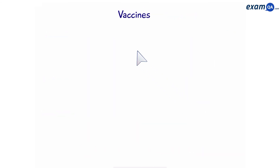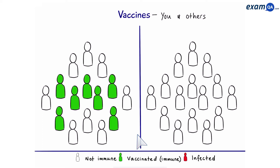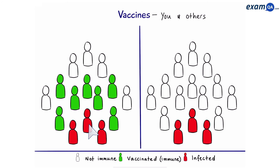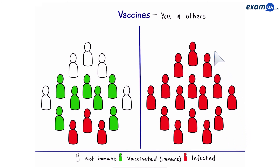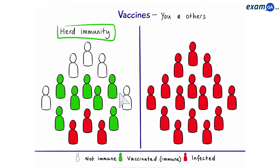Vaccines are good for you but also for others around you. Consider two populations: on the left, almost half the population is vaccinated; on the right, no one is vaccinated. If one person gets infected in each population, the pathogen in the left population spreads only to those who are not vaccinated and therefore not immune. However in the right population, the pathogen keeps on spreading. When people are vaccinated, not only does it protect themselves, but they also act like a shield and prevent the pathogen from spreading to other non-immunized people. This effect is called herd immunity.